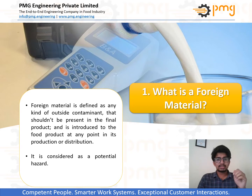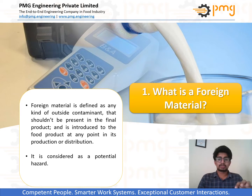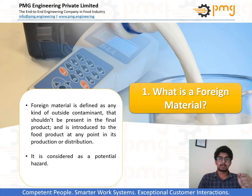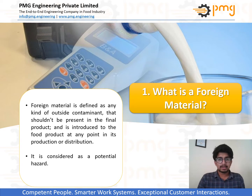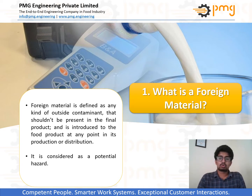So what is a foreign material? We can consider any material as a foreign material if it shall not be present in the final product. It is hence considered as a potential hazard. Usually foreign bodies make the food unfit and dangerous for human consumption, hence it is very important to understand the potential hazards in food industry and their control.